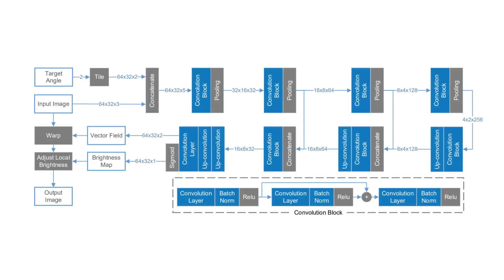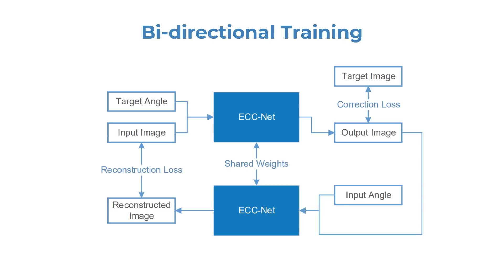Our system uses a deep convolutional neural network that redirects the gaze by warping and tuning the eyes in the input frames. To prevent this model from modifying the input images beyond repair, we trained it in a bidirectional way that enforced mapping reversibility. Our model learned how to move the gaze towards one direction and to revert it back to its original state to reconstruct the original input image simultaneously. This training setup reduced artifacts and resulted in more natural eye contact correction.